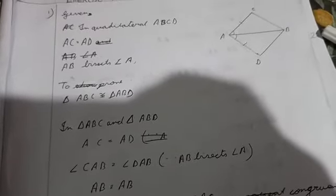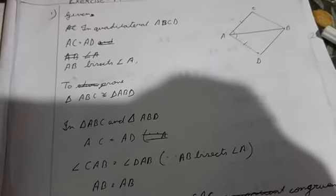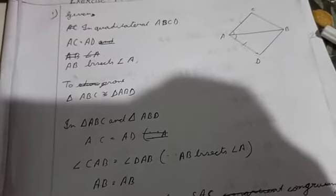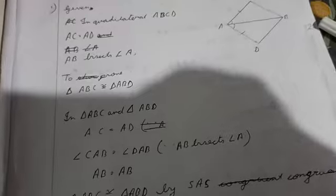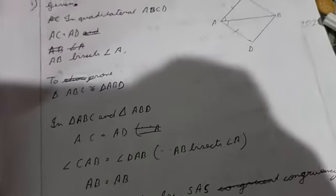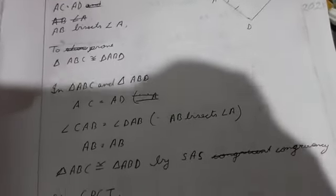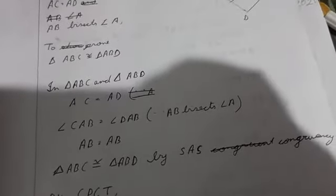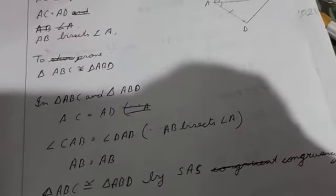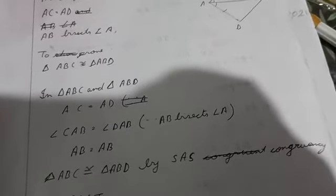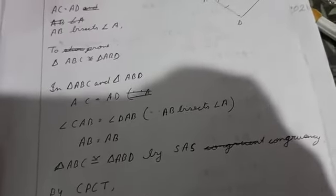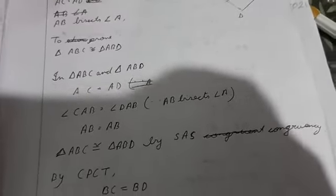In both triangles, side AB is common. So we have two sides and one angle equal. That is why we can say it is following SAS congruency.